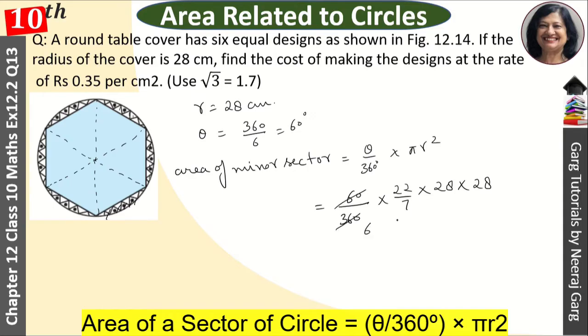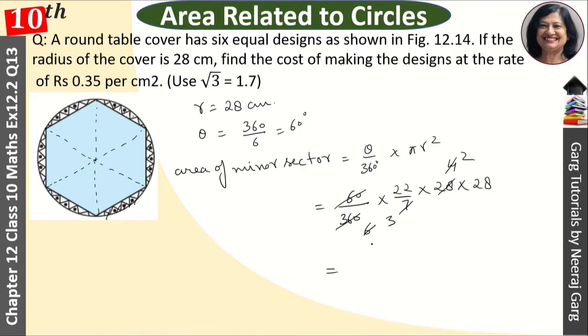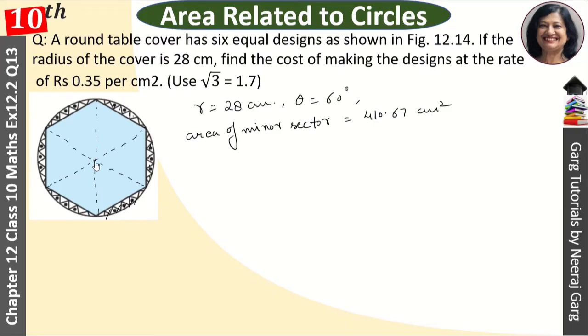This is 60, this is 6, this is 7, this is 4, then 2. Working through the calculations, this gives us 410.67 centimeters square. This will be the area of sector OAB.